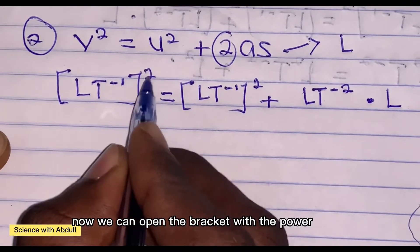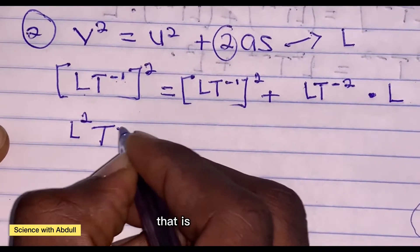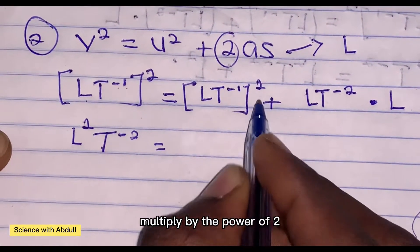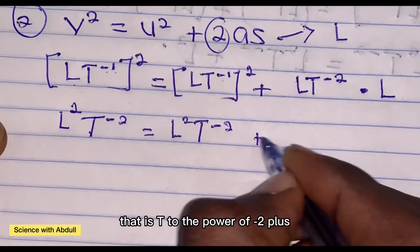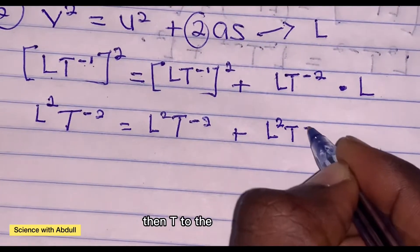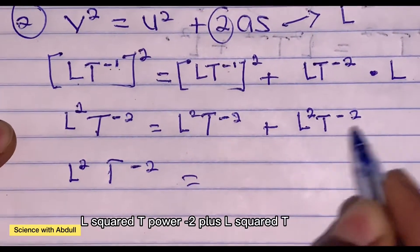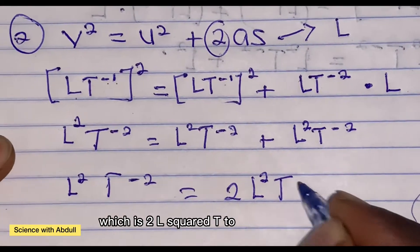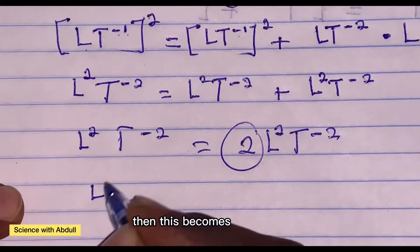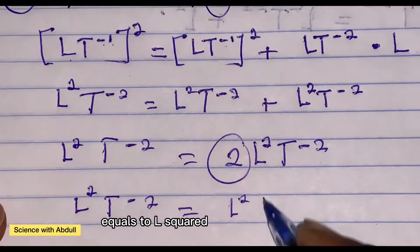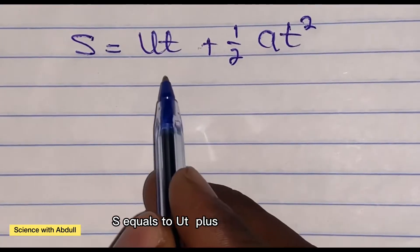Now we open the brackets with the power of 2. L multiplied by power 2 is L squared; T to the power of negative 1 multiplied by 2 is T to the power of negative 2. So L squared T to the power of negative 2 equals L squared T to the power of negative 2, plus L squared T to the power of negative 2, which is 2 L squared T to the power of negative 2. Since 2 is a dimensionless constant we neglect it, giving L squared T to the power of negative 2 equals L squared T to the power of negative 2. Both sides are equal — this formula is dimensionally correct.